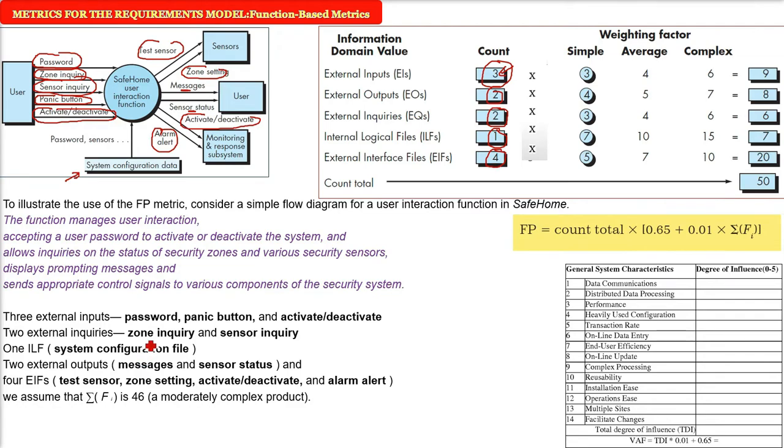Now we have a count for each of these input parameters. Now we need count total. So let us assume that it is simple. We are putting the weighing factor for simple and these numbers are empirically already found and these are specific to certain applications. So average, complex, these are already empirically predetermined values. So we are not taking average and complex right now. We are just saying let us use it for a simple functionality. So we will not use the last two columns. Now we have to multiply the first two columns one by one. Three into three is nine, two into four is eight, two into three is six, one into seven is seven, four into five is twenty. Now we will add them. Summation. 50 is our count total.